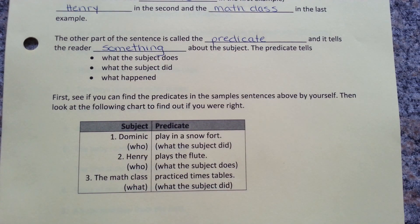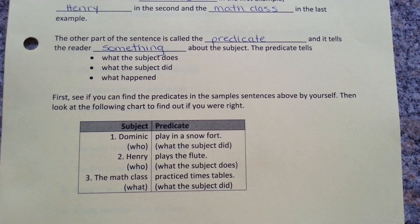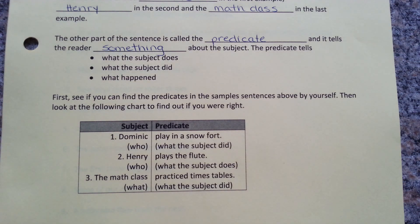In sentence one, Dominic is the subject. Played in the snow fort is the predicate — it answers the question what the subject did. Number two: Henry is the subject. Plays the flute is the predicate — it answers what the subject does.